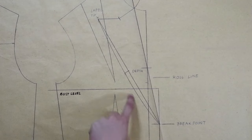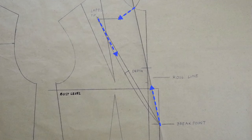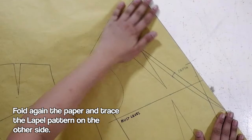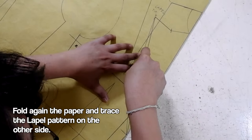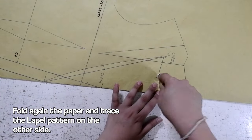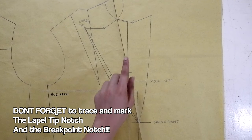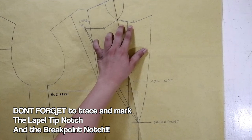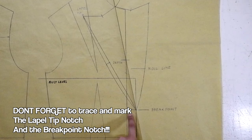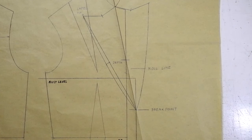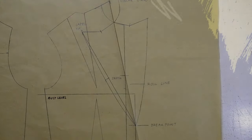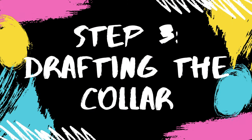Next, fold again our paper and trace the lapel using our trusty tracing wheel. And please do not forget to trace the important notches at the lapel and at the break point. We will be using these notches for the sewing part. Okay? Let's now move on to the next step.